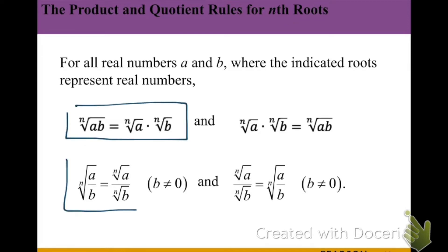For example, when we have a product of the same root, we can go ahead and break those apart — like the nth root of a·b into the nth root of a times the nth root of b. It also goes backwards, where we can bring them inside the root if needed. Same thing with our quotient rule: if we're taking the nth root of a quotient, we can split that into the nth root of the numerator divided by the nth root of the denominator, and vice versa.